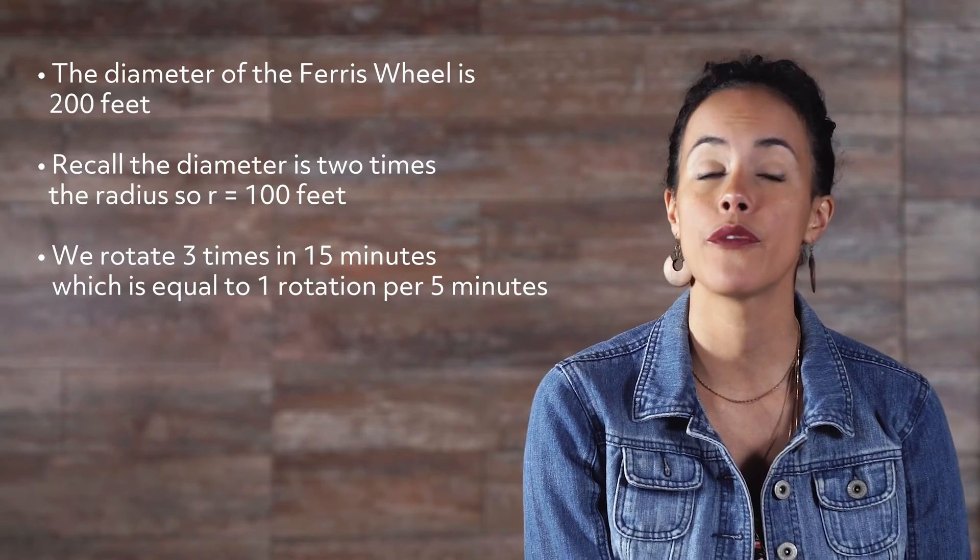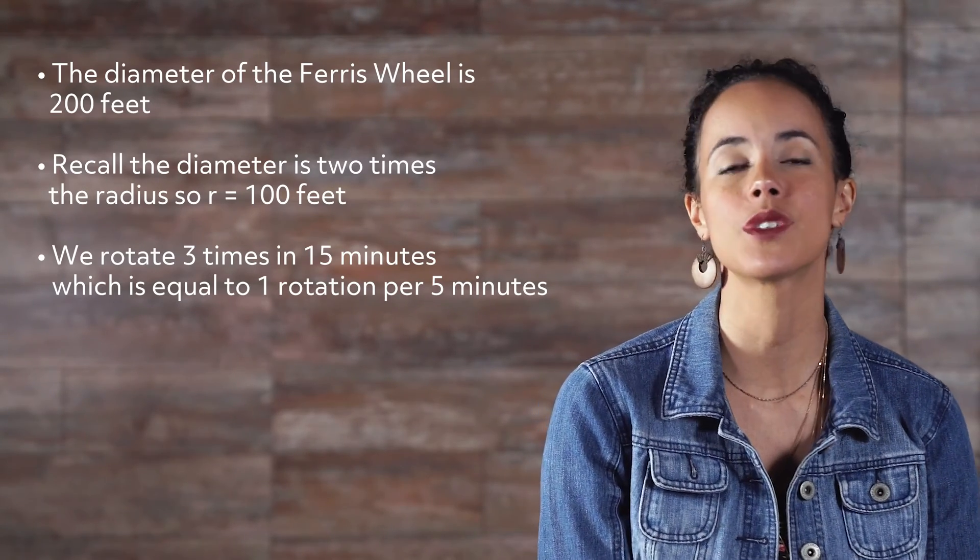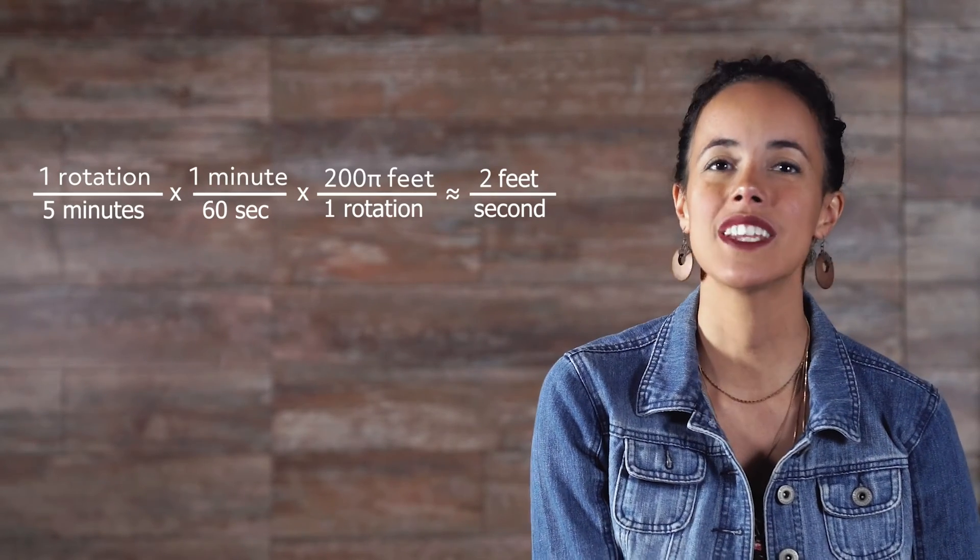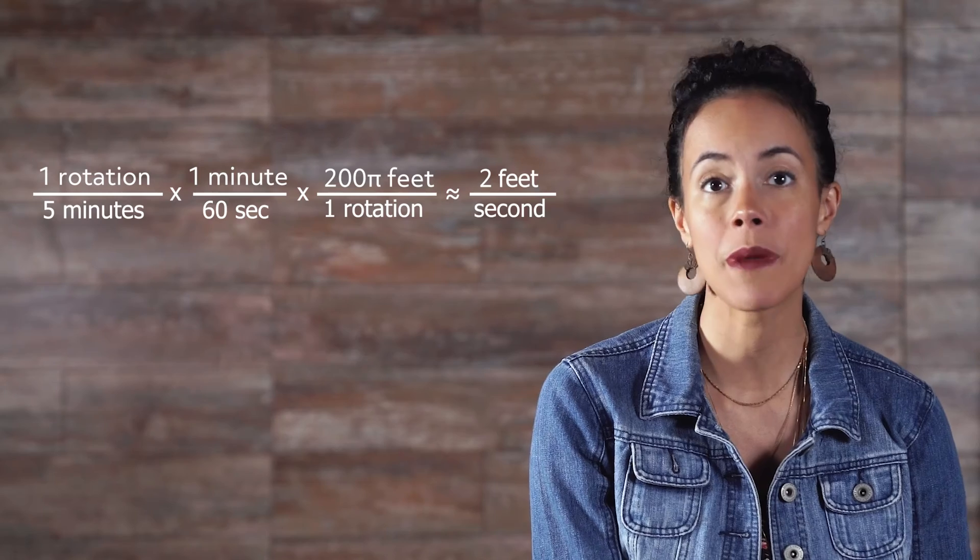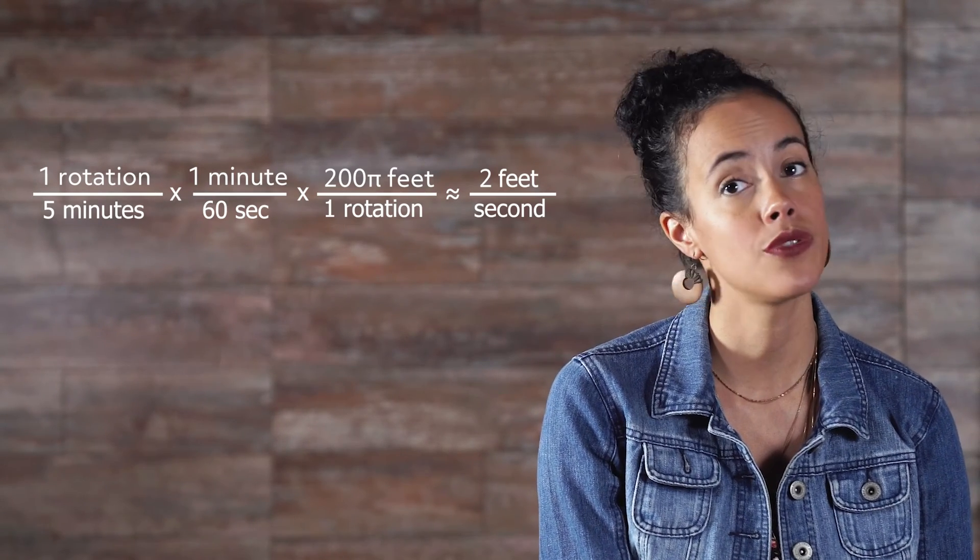We rotate 3 times in 15 minutes, which is equal to 1 rotation per 5 minutes. Now we can use v equals 2 pi r omega to find our linear speed to be approximately 2 feet per second.